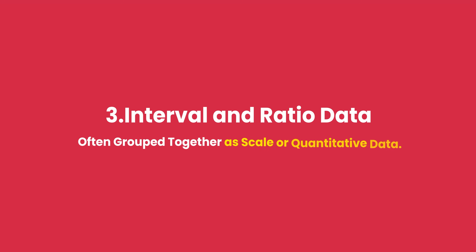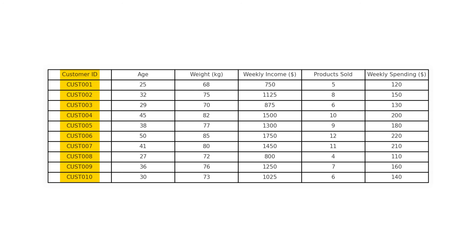Finally, we have interval and ratio data, often grouped together as scale or quantitative data. These are numbers that can be measured, such as age, weight, income, number of products sold, or customer spending per week. Interval and ratio data is quantitative, meaning it deals with measurable numbers.